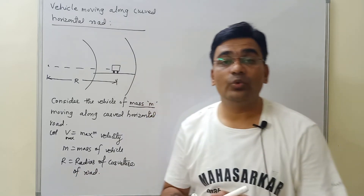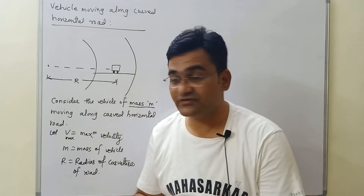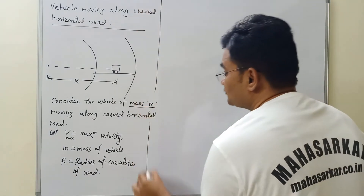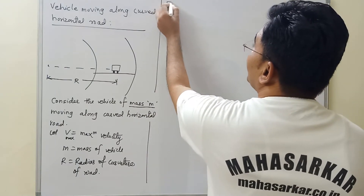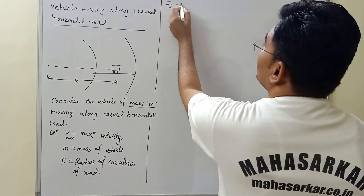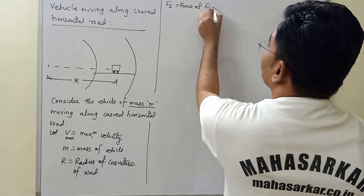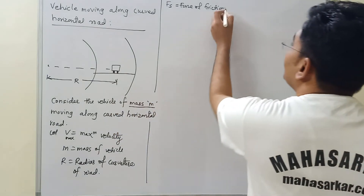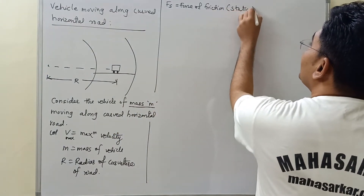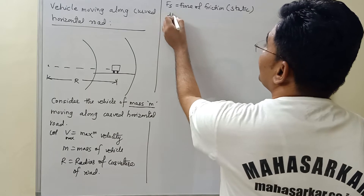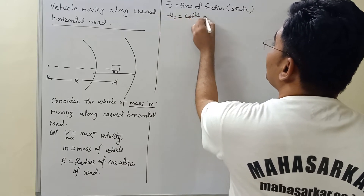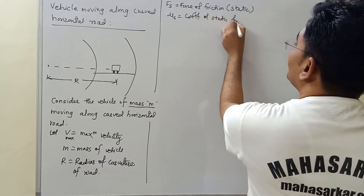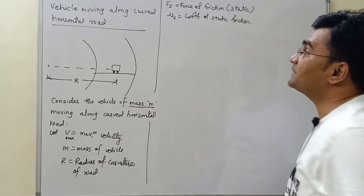We perform motion because of frictional forces. So frictional force is present in terms of coefficient of friction. Let Fs be the force of friction. Here the vehicle is supposed to take a turn, so this will be static friction. Let μs be the coefficient of static friction.